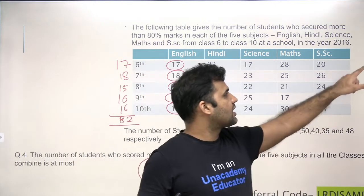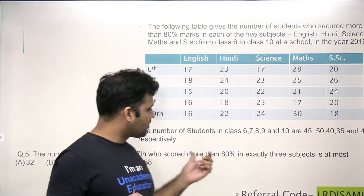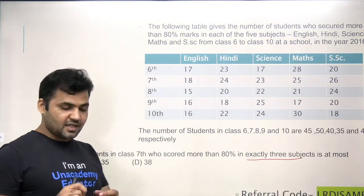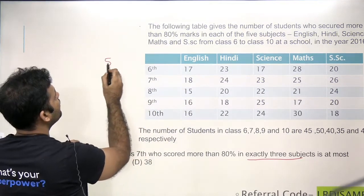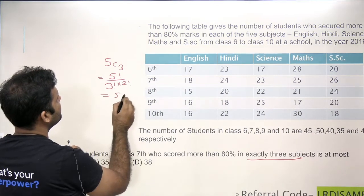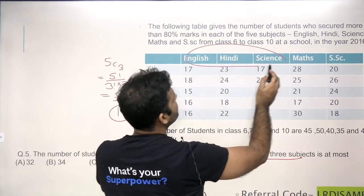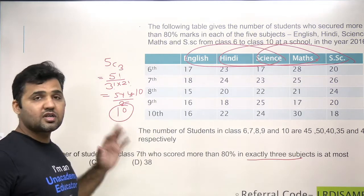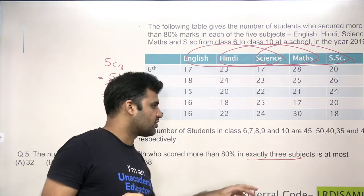Now for conceptual clarity, let's look at question number five — the last question of the set: the number of students in class 7th who scored more than 80% in exactly three subjects. The previous question asked about five subjects; this one asks about exactly three subjects. When dealing with exactly three subjects, there is no need to take the minimum value, because selecting three out of five subjects gives 5C3 = 10 possible combinations — not just one combination like before.